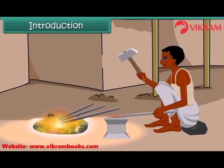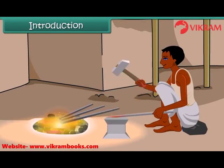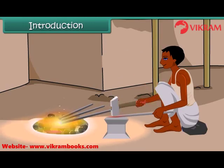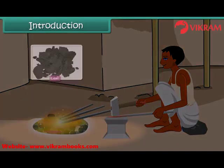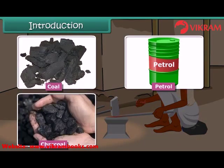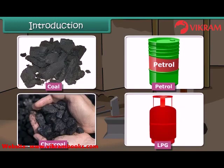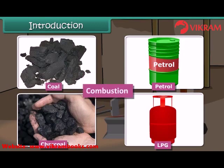The blacksmith burns coal to get hot iron which can be beaten to desired shape. A variety of fuels is used in daily life such as coal, petrol, charcoal, LPG, etc. Do you know which chemical process is taking place during the burning of these fuels? It is combustion. In this lesson you will learn about combustion of fuels.